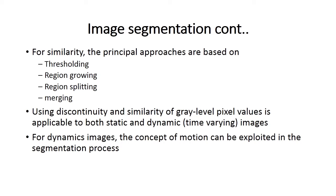Suppose we have a value alpha that is below and above the value of any image. We are also having region growing and region splitting — we can divide any image along certain boundaries and lines. We can also merge images, combining their properties. This principal approach for image segmentation using discontinuity and similarity of gray level pixel values is applicable to both static and dynamic images. For dynamic images, the concept of motion can be exploited in segmentation.